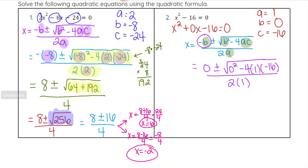Now simplify the discriminant. 0 squared is 0. Negative 4 times 1 is negative 4, so we have negative 4 times negative 16. A negative times a negative becomes positive. That gives us 64. So this is 0 plus or minus the square root of 64 over 2.